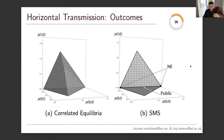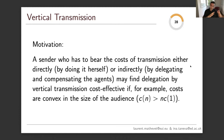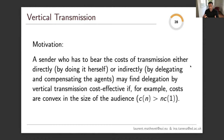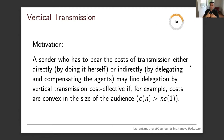Now moving to vertical transmission. Consider the following motivation: a sender who has to bear the cost of transmission, either directly or by delegating, may find delegation by vertical transmission cost-effective — for example, if costs are convex in the size of the audience. If the cost of speaking directly to n people is strictly larger than n times the cost of speaking to one person, then decentralization would make sense. In this paper, we are not modeling cost explicitly but provide this as intuition for why these objects are appealing.